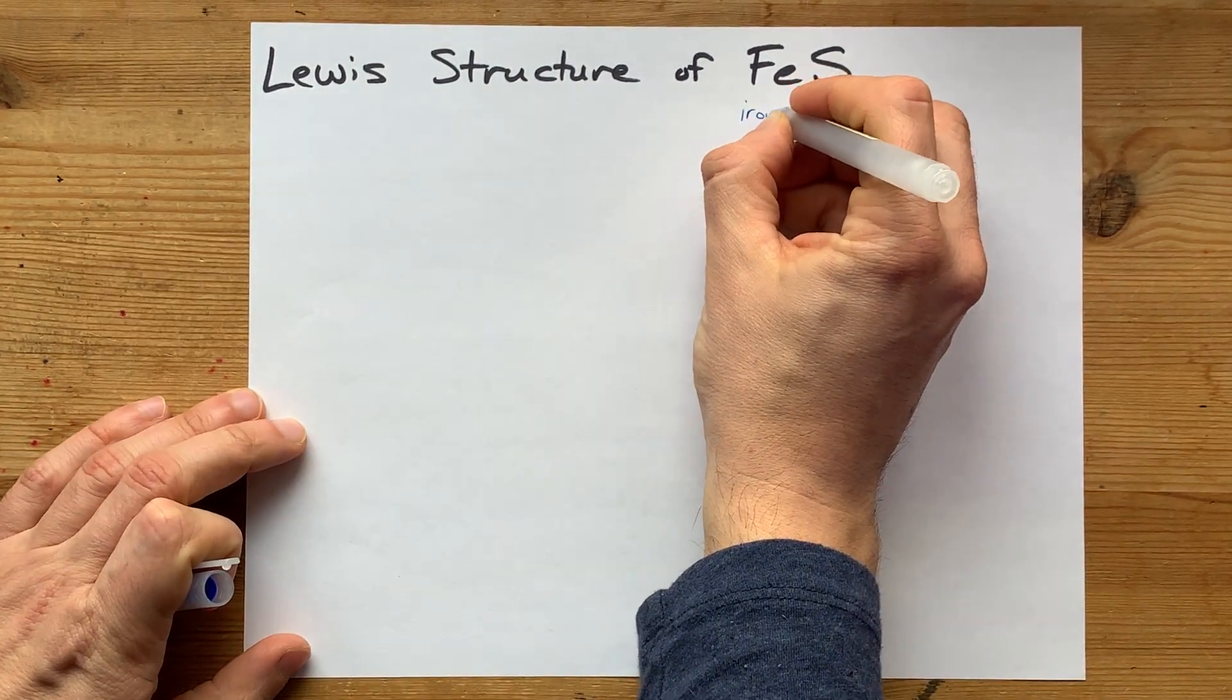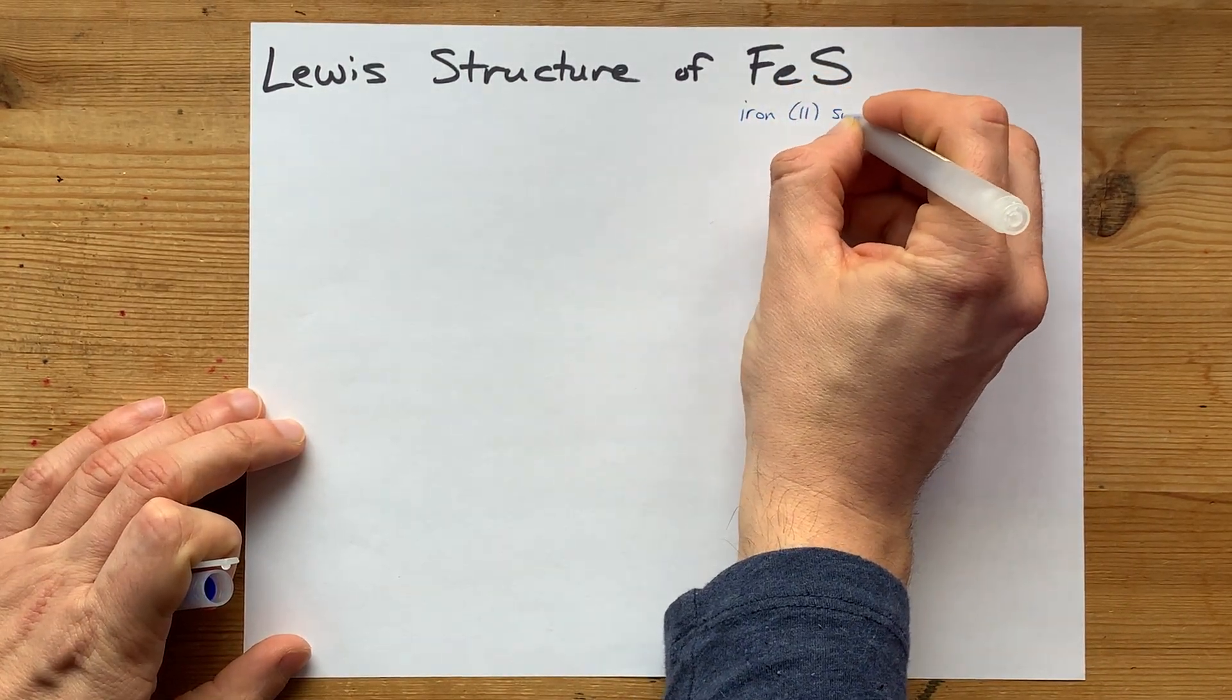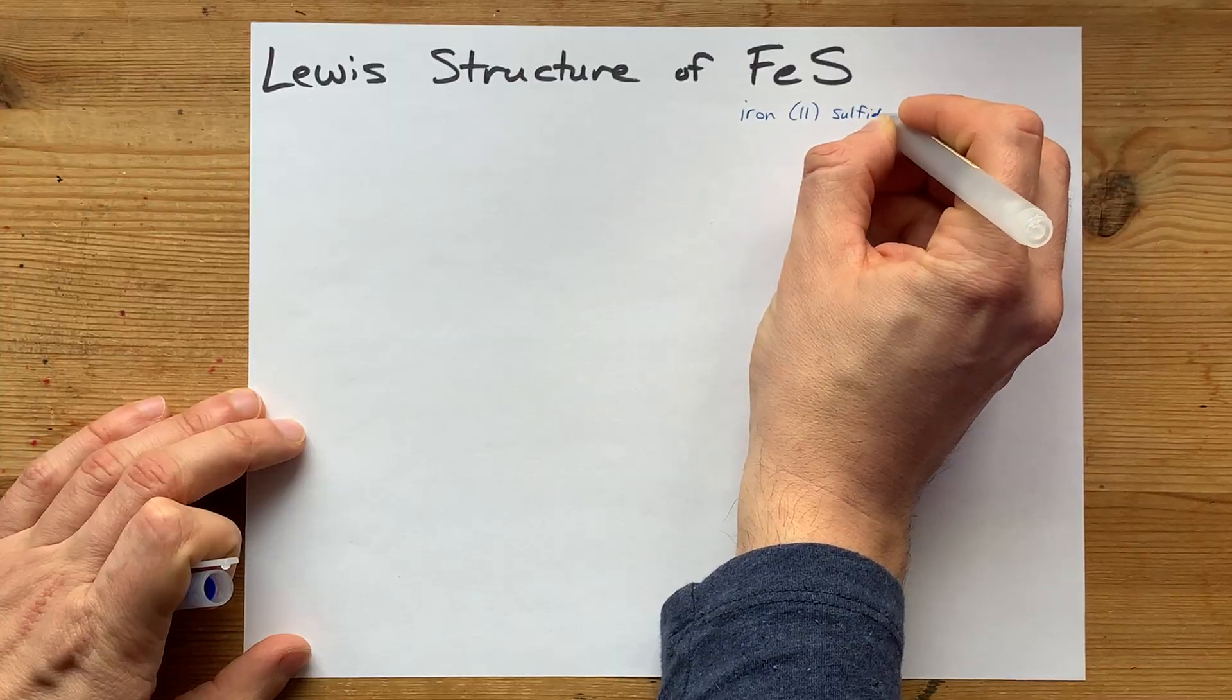Let's draw the Lewis structure for FeS, that's iron II sulfide.